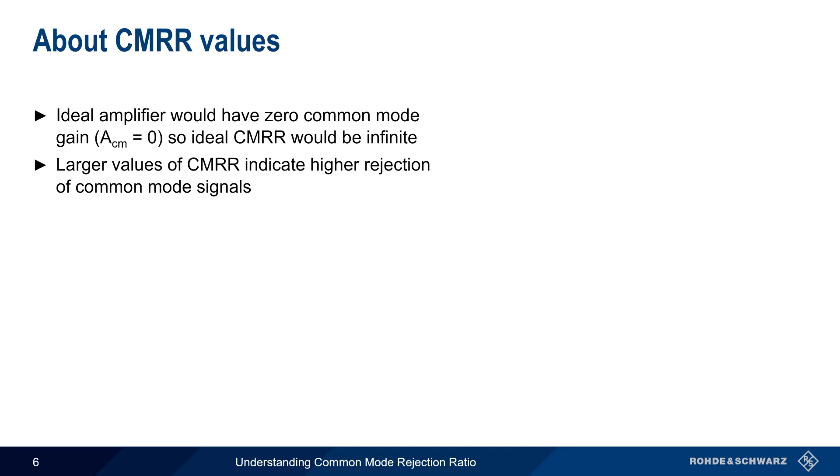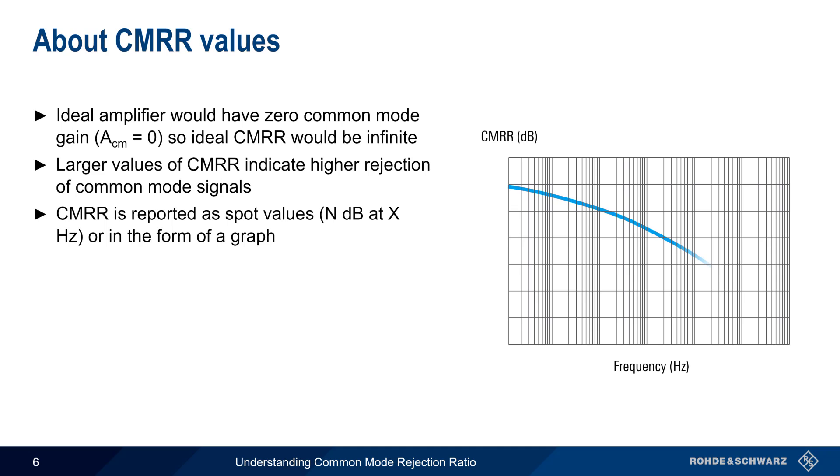Common mode rejection ratio can be reported as spot values at given frequencies, or in the form of a graph, usually on a log scale.